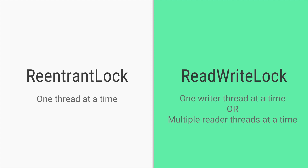A ReentrantLock allows only a single thread to acquire the lock at a time, while the ReadWriteLock has two functionalities: a reader lock and a writer lock. In the reader lock functionality, multiple threads can acquire the read lock at the same time. In the writer lock functionality, it behaves like a ReentrantLock — only one thread can acquire the write lock at a time. The advantage is that if there are multiple reader threads that only want to view the state, allowing all of them to run simultaneously is much more performant.